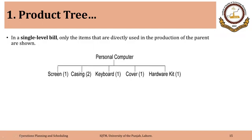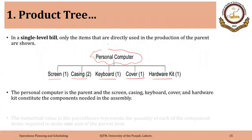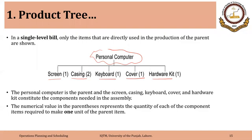Here is a simple example of a personal computer. It has a screen, two casings, a keyboard, a cover, and a hardware kit — all required to make the final personal computer. It is called a single level because after the final product, only one level of sub-assemblies or components is shown — the materials used to make the final computer. The personal computer is the parent and the screen, casing, keyboard, cover, and hardware kit constitute the components needed in the assembly.